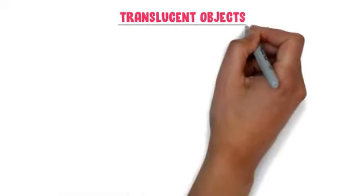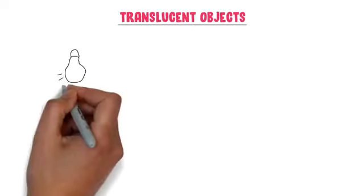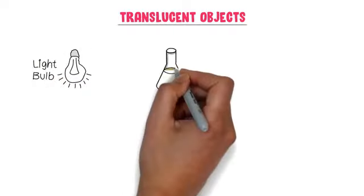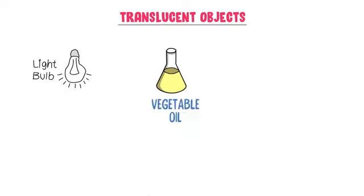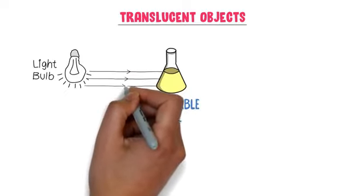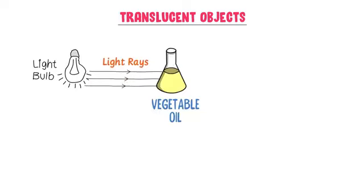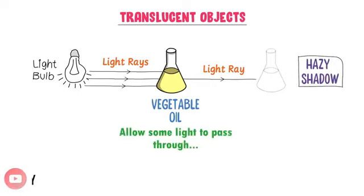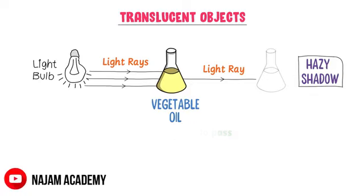Now what about translucent objects? Well, consider a luminous object like a bulb which produces light. This time, I place vegetable oil in front of the bulb. Light rays are hitting the vegetable oil. On the opposite side, we can observe that only some rays of light pass through the vegetable oil and a hazy shadow is formed. So vegetable oil is a translucent object because it allows some light rays to pass through it and it forms a light or hazy shadow.